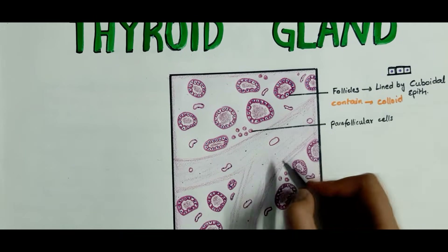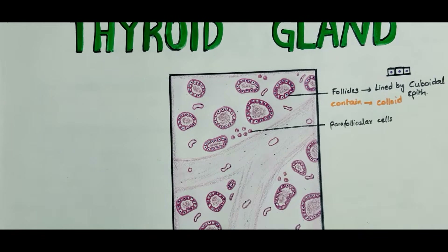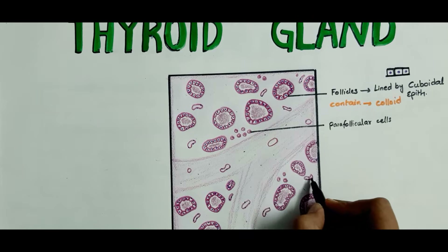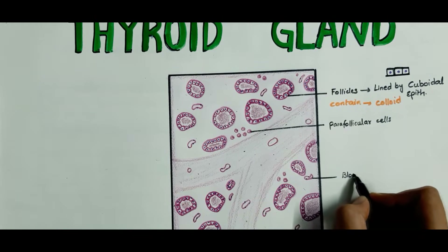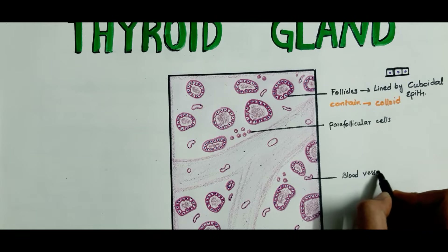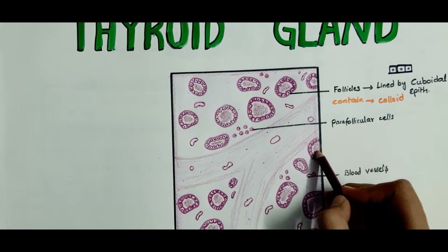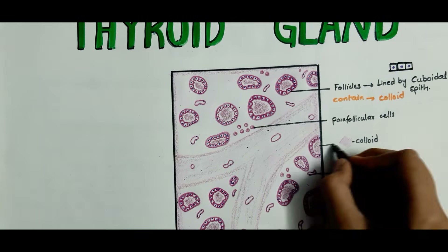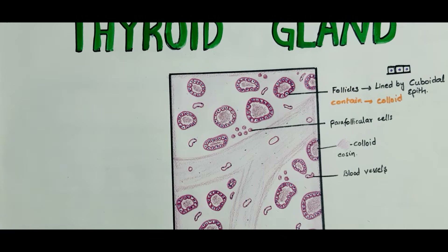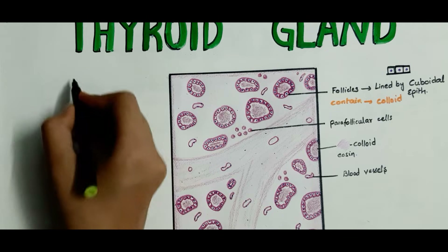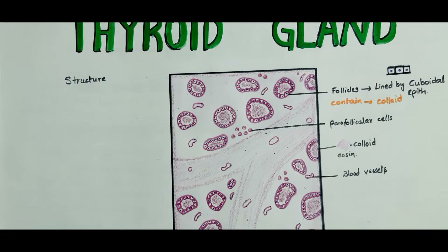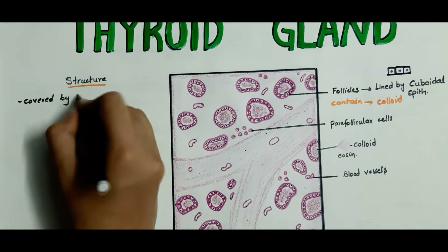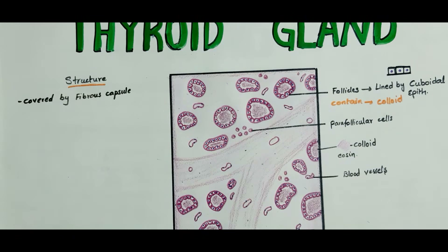In the intervals between the follicles there is some connective tissue. You can also note the blood vessels here. This pink-stained or eosin-stained material is the colloidal material.